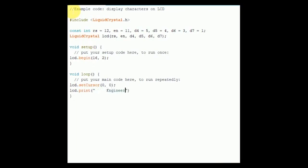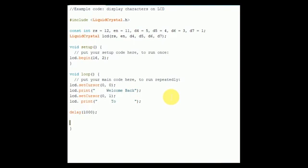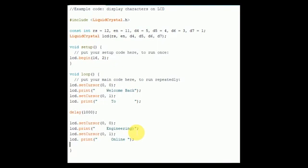Write a string using the LCD.print command, then change the position of the cursor — move to the first row, 0th column — and write another string. Add a delay of 1 second, then repeat the same procedure. As a result, you will see two strings appearing on the LCD with a delay of 1 second. Compile the code and correct any syntax errors, then upload the sketch to Arduino Uno and see the results.